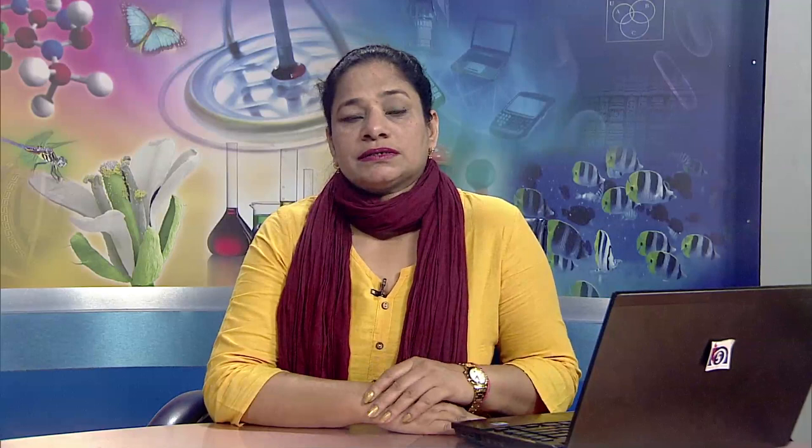In rill erosion, finger-like rills appear on cultivated land after it has undergone sheet erosion. These rills are usually smoothened out every year while forming. Each year the rills slowly increase in number, become wider and deeper. When rills increase in size, they are called gullies. Ravines are deep gullies.